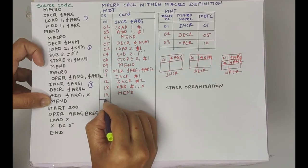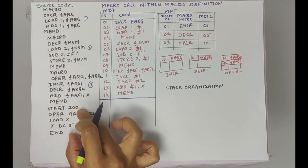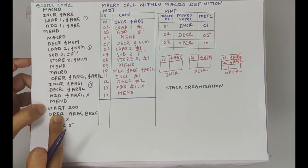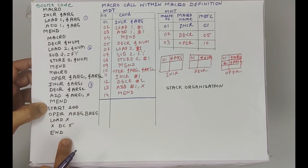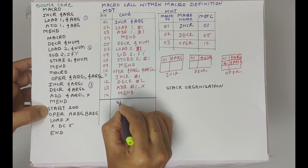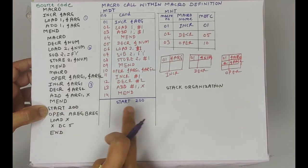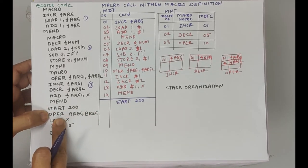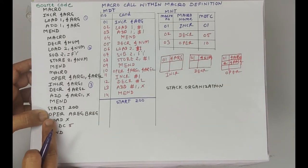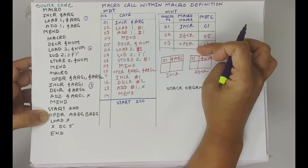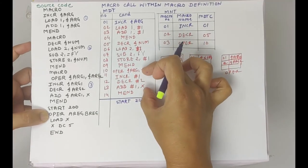Now we will look at the source program. After scanning line by line we reach the start statement. For this part of the program we generate the target code or final output. So start 200 is written as-is — it has no macro call. The next line is OPER AREG, BREG — this is a macro call. AREG and BREG are the actual parameters. OPER is located at the 10th position in the macro definition table.